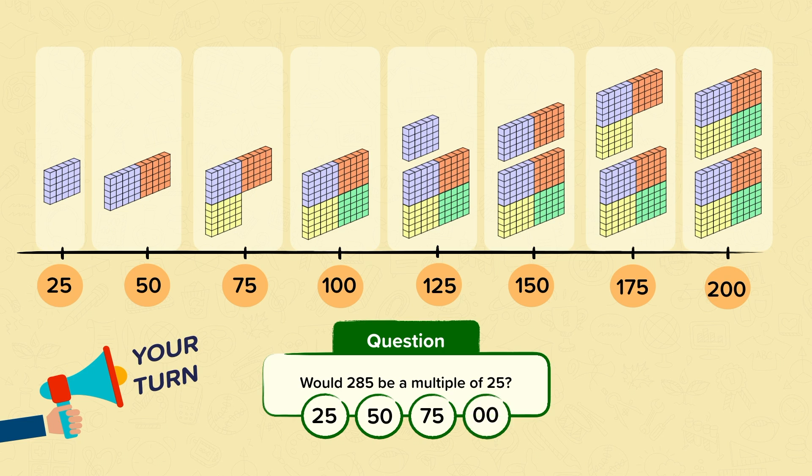With this pattern in mind, we know that 285 can't be a multiple of 25 because it ends in 85. Multiples of 25 can only end in 25, 50, 75, or 00.